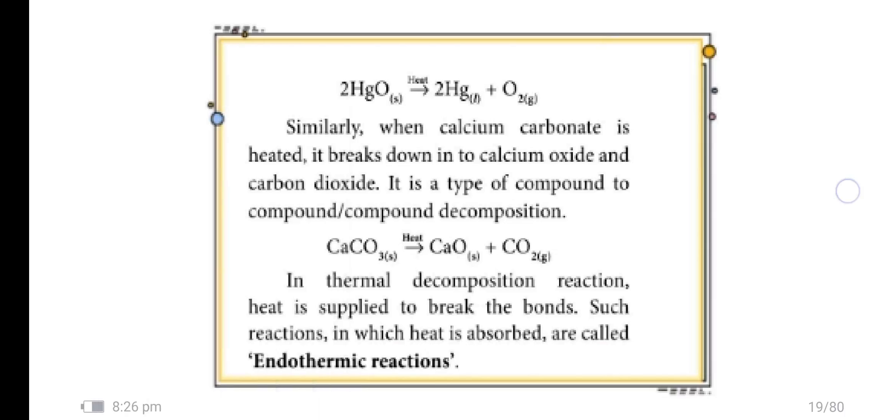When calcium carbonate is heated, it breaks down into calcium oxide and carbon dioxide. It is a type of compound to compound-compound decomposition: CaCO3 gives CaO plus CO2. In thermal decomposition reaction, heat is applied to break the bonds. Such reactions in which heat is absorbed are called endothermic reactions.